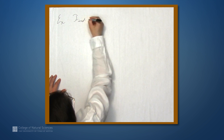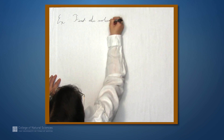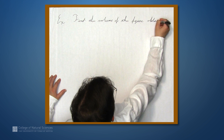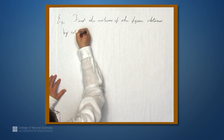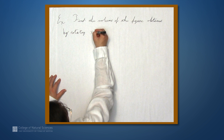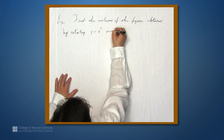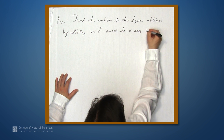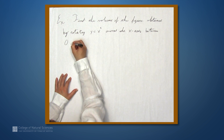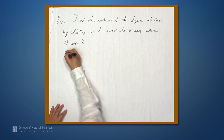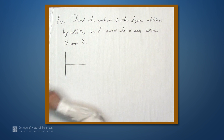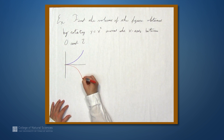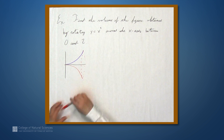Let's find the volume of the figure obtained by rotating y equals x squared around the x-axis, between 0 and 2. We can sketch this region — it's often helpful to see what this looks like. x squared looks something like this, and when we rotate, we end up with a mirror image. So we get a funnel-like shape.